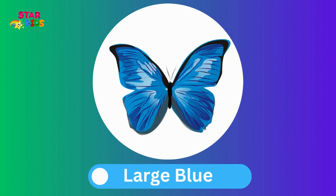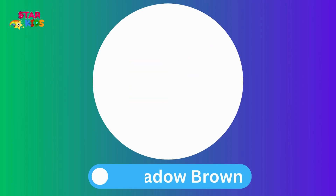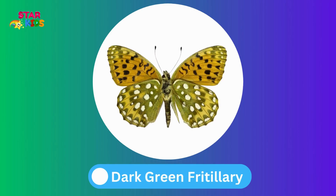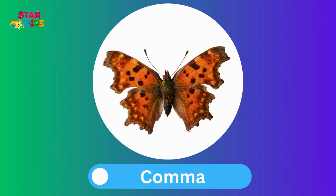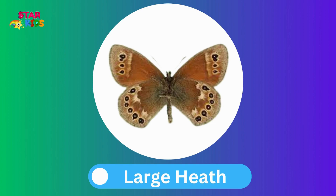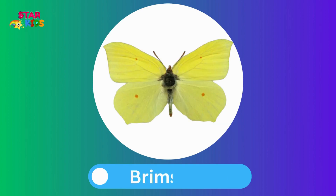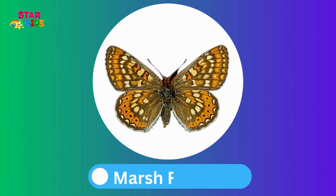Large blue. Metal brown. Dark green fritillary. Common blue. Comma. Wood white. Large heath. Brimstone. Padanus blue. Marsh fritillary.